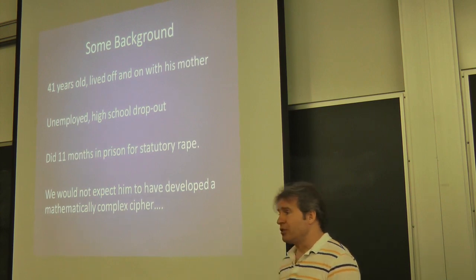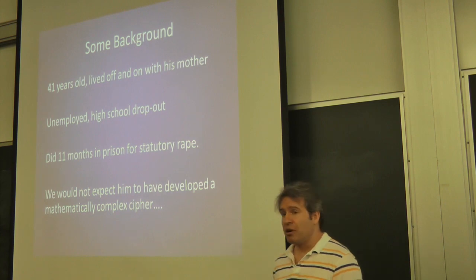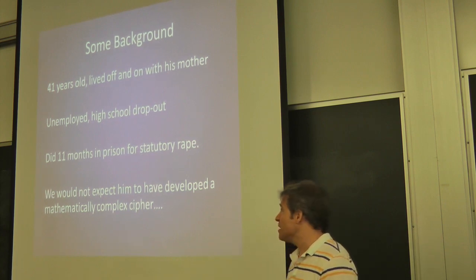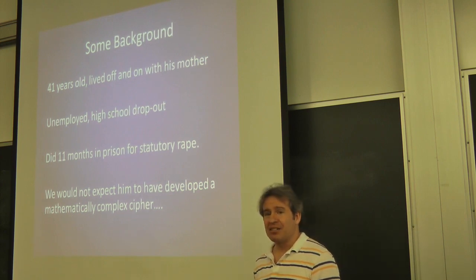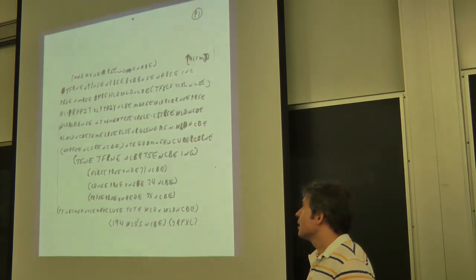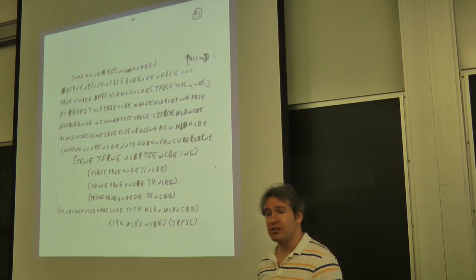Some background. He's 41 years old. He'd live off and on with his mom, his elderly mother. He was unemployed. He was a high school dropout. He did 11 months in prison for statutory rape. We don't expect that it's going to be a mathematically sophisticated cipher. Here's part one or part two. We don't know which is which, but here's the cipher.